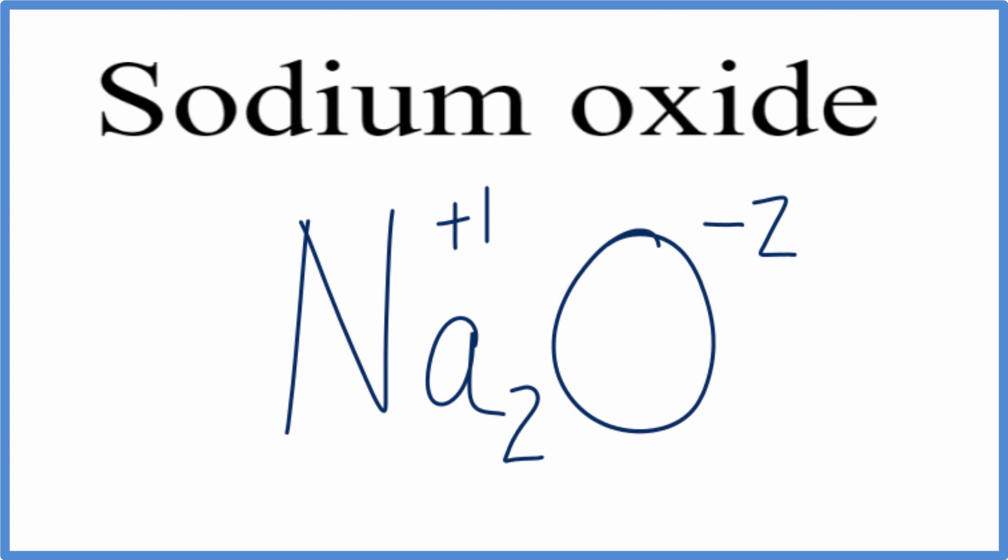We can check our work using the crisscross method. We'll take the two here from the charge on the oxygen, move it down here to the sodium, and move the one from the sodium over here onto the oxygen as its subscript. You don't usually write one, so we'll get rid of that, we'll get rid of the charges.